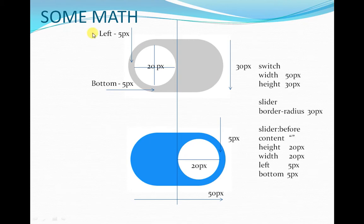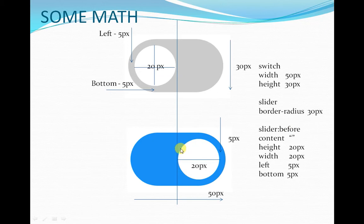So the entire switch is going to have a width of 50 pixels and a height of 30 pixels. The slider's border radius is going to be 30 pixels, which is the height of the switch. The circular button will be added using the pseudo element ::before with a content property. The content won't display anything visible, but the height and width are going to be 20 pixels, and the left and bottom positions will be 5 pixels.